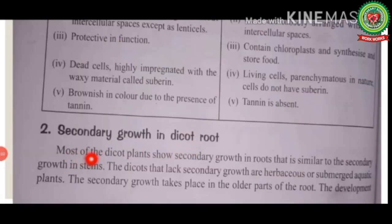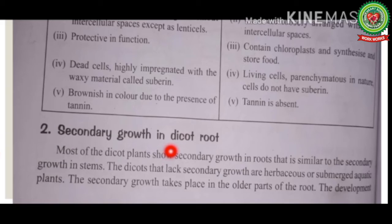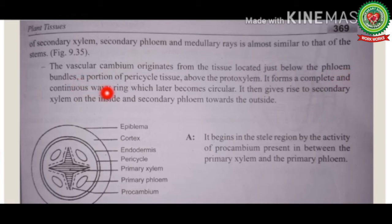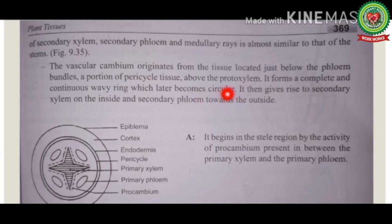From the textbook: most dicot plants show secondary growth in roots similar to secondary growth in stems. Dicots that lack secondary growth are herbaceous and submerged aquatic plants. Secondary growth takes place in older parts of the root. The vascular cambium originates from the conjunctive tissue located just below the phloem bundles, and a portion of pericycle tissue above the protoxylem, forming a complete and continuous wavy ring which later becomes circular due to unequal rate of cambium cell growth. It then gives rise to secondary xylem on the inner side and secondary phloem towards the outside.